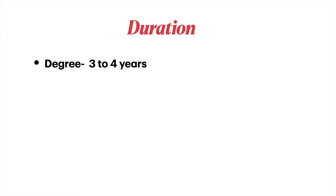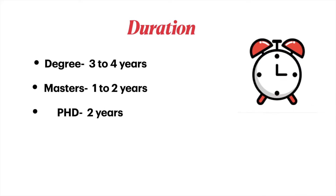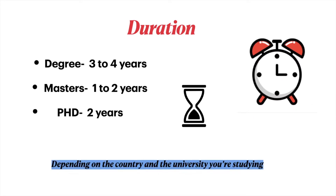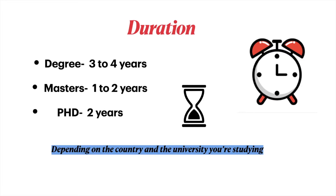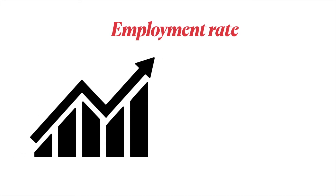For degree duration: a bachelor's degree takes three to four years, a master's takes one to two years, and a PhD takes two or more years. This depends on the country and the university you're studying at.